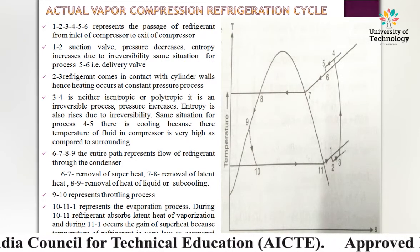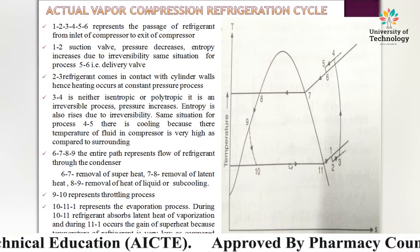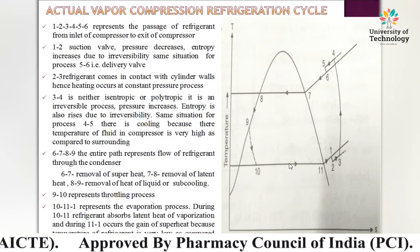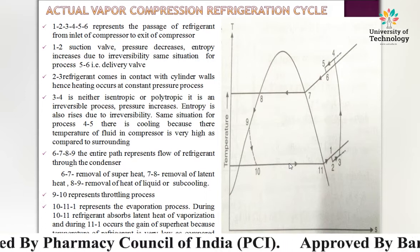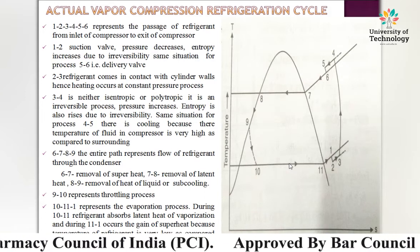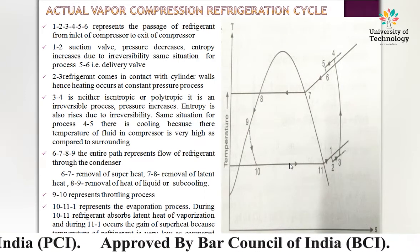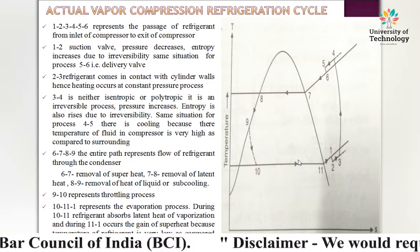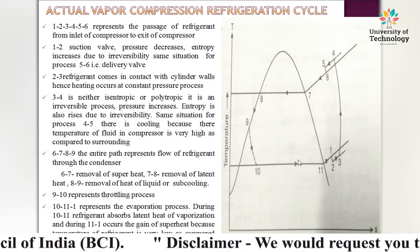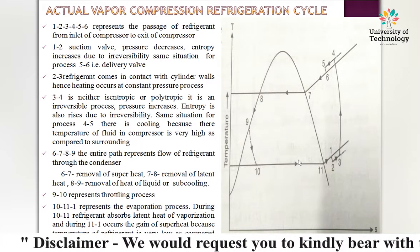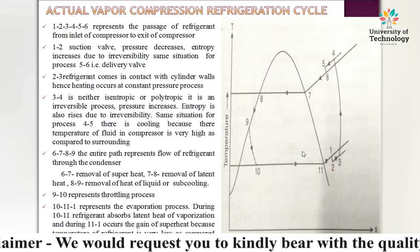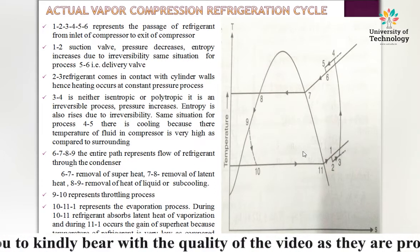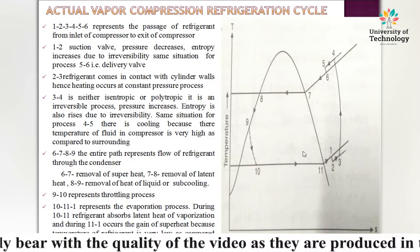From 2→3, the refrigerant comes in contact with the cylinder wall, so heating occurs at constant pressure. In summary: process 1→2 involves a pressure drop across the suction valve, and process 2→3 is heating at constant pressure.